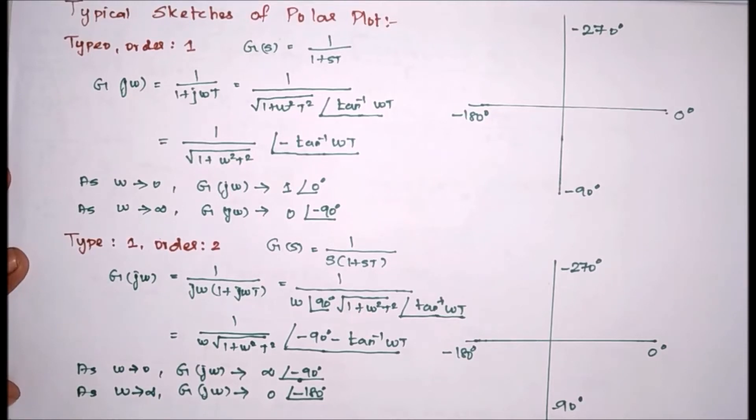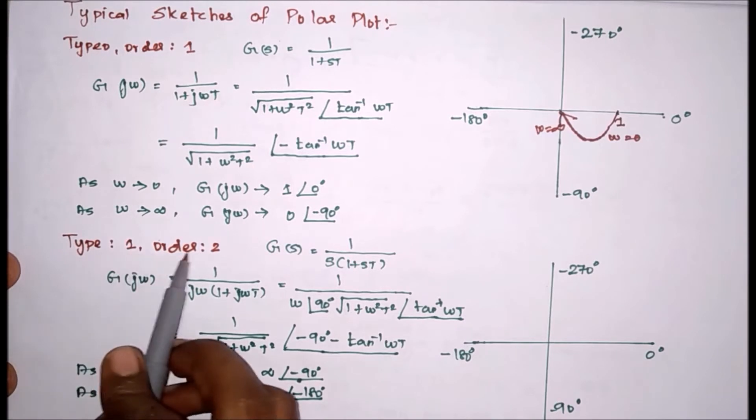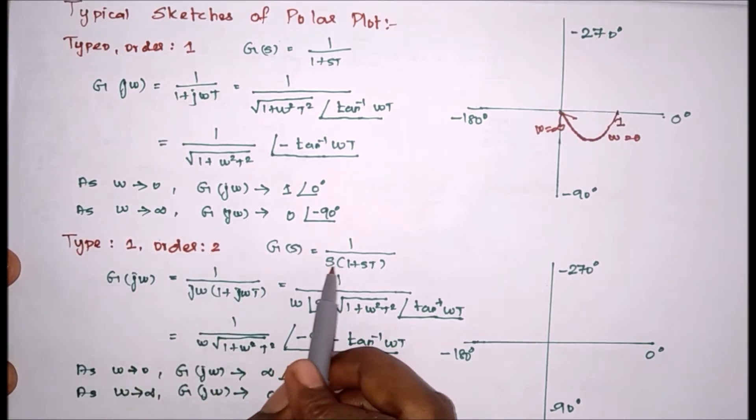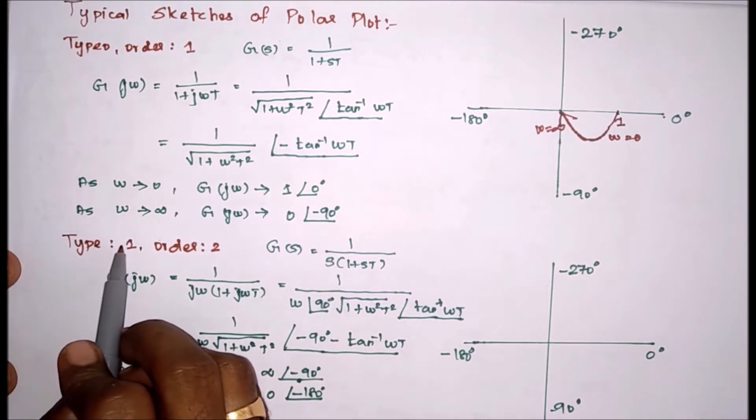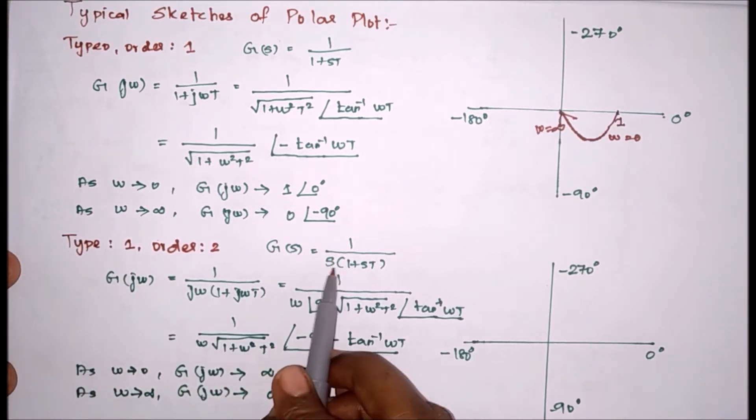In this video we are going to see about the drawing of polar plot for type 1, order 2 system. As I already told, how many number of poles are in the origin? So here one number of poles, it means s power equal to 1, therefore it is a type 1 system. Order means total number of power of s.